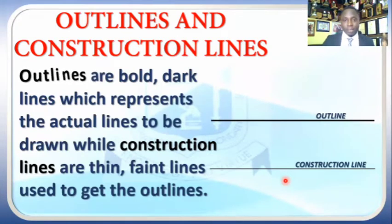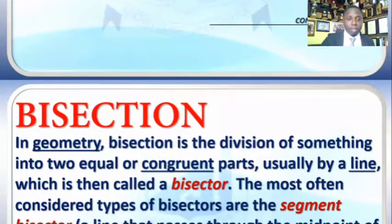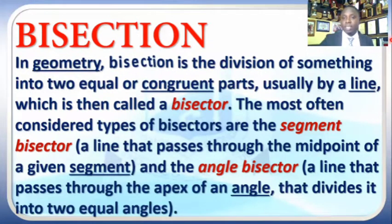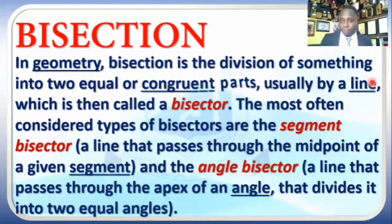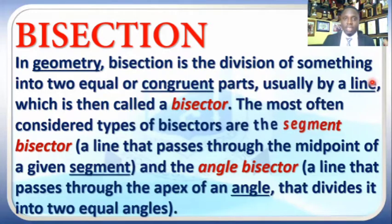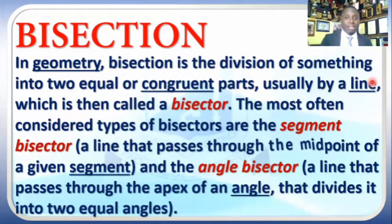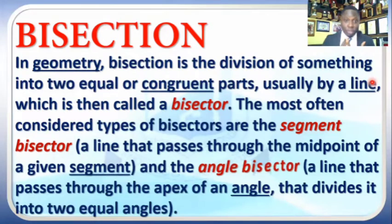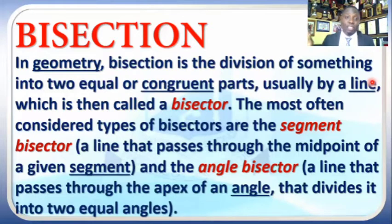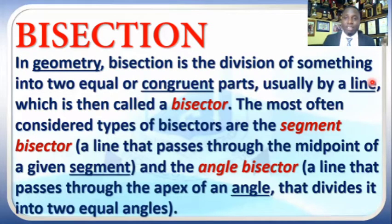Let's talk about bisection. Bisection in geometry simply means we want to cut a shape, a plane shape, or a line segment, or an angle into two equal parts — that is simply what bisection means. I can decide to bisect a circle, meaning I want to cut it into two equal parts. I can also bisect a line segment or bisect an angle. Bisection is a term that is associated with geometric construction, and I will be using it a lot in this class.